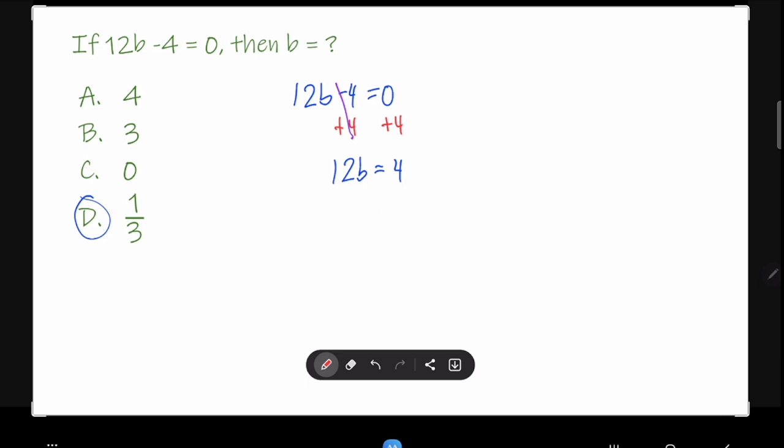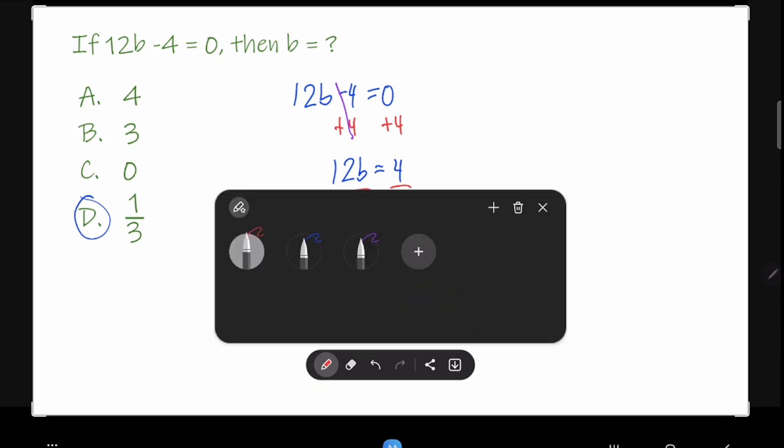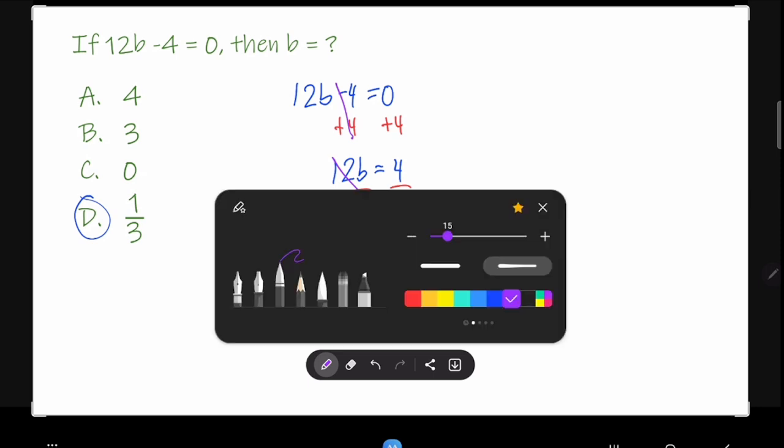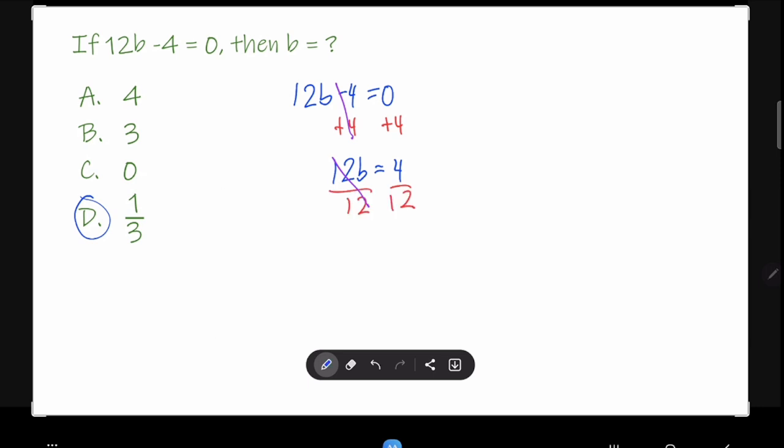You have to do the opposite, which is division. We divide in order to cancel it. What's left is only B and the other side is 4 over 12.